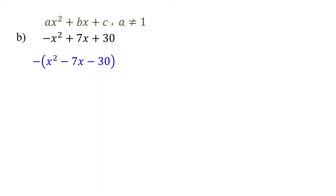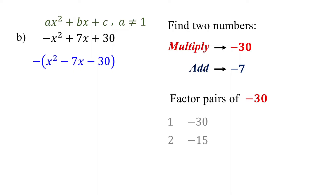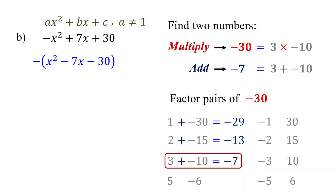Please pause the video and give it a try. First, find two numbers that multiply to give negative 30 and add up to negative 7. List the factor pairs of negative 30: 1 and negative 30, 2 and negative 15, 3 and negative 10, 5 and negative 6. Change the signs of these factor pairs to obtain the other half. Now all these pairs multiply to give negative 30, but only one of them adds up to negative 7. Add the pairs to find out. It is the pair 3 and negative 10. Therefore, the expression inside the parentheses is factored as (x plus 3) times (x minus 10).